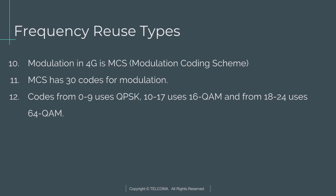The modulation technique used in 4G is MCS, that is Modulation and Coding Scheme. It has 30 codes for modulation: codes 0 to 9 use QPSK (Quadrature Phase Shift Keying), codes 10 to 17 use 16-QAM, and codes 18 to 24 use 64-QAM. This concludes the lecture.